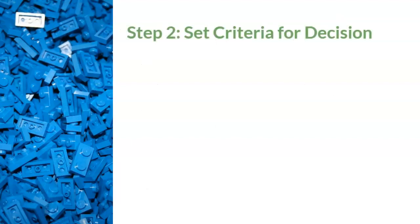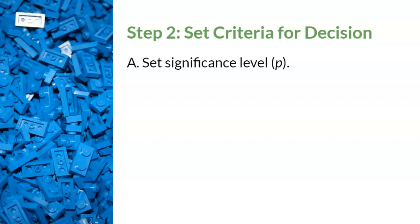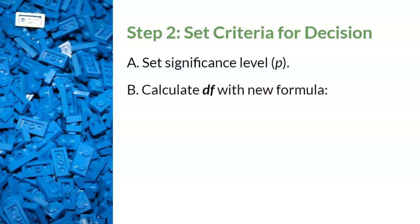Step 2, the blue Lego, is to set the criteria to make a decision whether the study worked or not. This step has modifications because we're testing data that consists of nominal variables. Recall that a nominal variable is a variable with a name — the variables have categories that consist of names but with no numerical order. First, we will set our significance level p as we did for previous hypothesis tests. Second, we'll have our first modification.